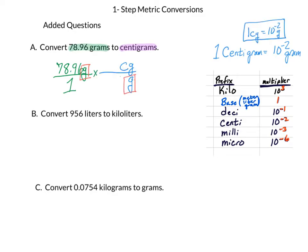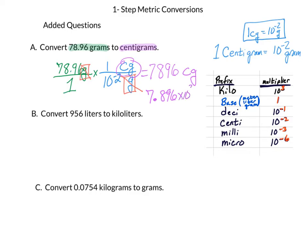The grams cancel out and we're left with centigrams as our answer. Now we have to figure out what to do with those exponents. The centi already has its prefix — the letter C — which means the exponent goes with the one that says grams: that'll be 10 to the negative 2, with the 1 on top. On your calculator, you're going to type in 78.96 divided by 1, times 1, divided by 10 to the negative 2. That gives us the answer of 7,896 centigrams. In scientific notation, that will be 7.896 times 10 to the third centigrams.